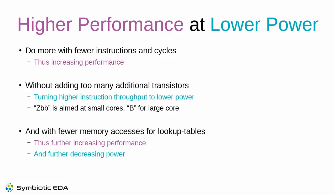On the topic of higher performance at lower power: with these instructions we want to do more in fewer cycles. By adding only a small number of transistors, you can do more in the same time — or the same thing in fewer cycles — without adding many transistors, giving a good chance of actually decreasing power. In many cases, the obvious alternative is using lookup tables and combining results, which creates more memory accesses. Our instructions reduce those memory accesses, increasing performance and decreasing power.